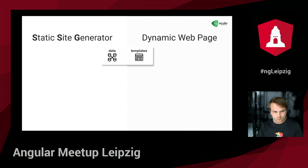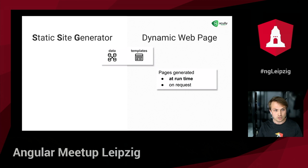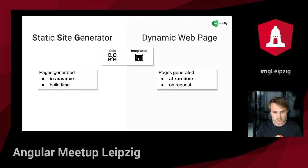A dynamic web page can be a front-end or server-side dynamic web page — for example Angular, Vue, or React on the front-end, or PHP, ASP.NET, or Node.js on the server side. They both use data and HTML templates, and the process of generating the page is the same. The difference is that a dynamic web page generates the result HTML at runtime, on request by the user. A static site generator is an extension or alternative of that process where pages are generated at build time — in advance, as opposed to rendering them at runtime.